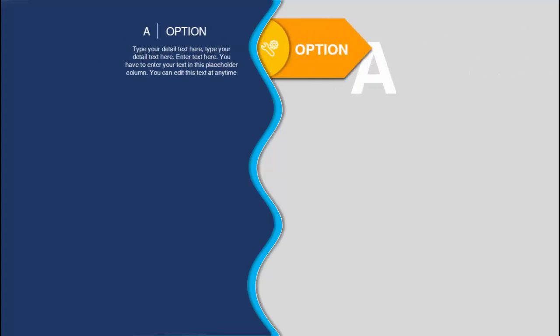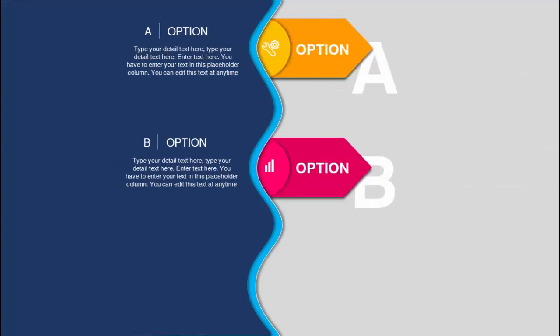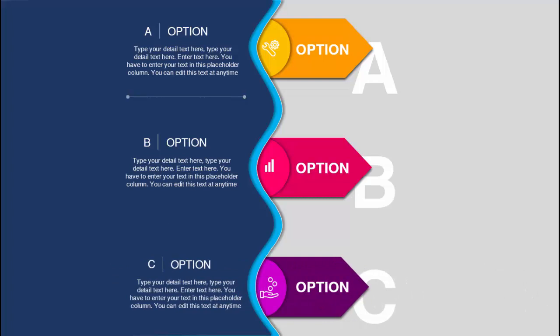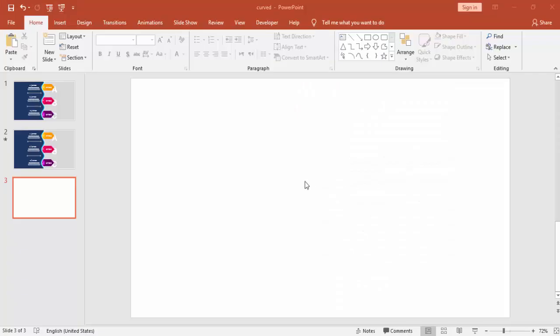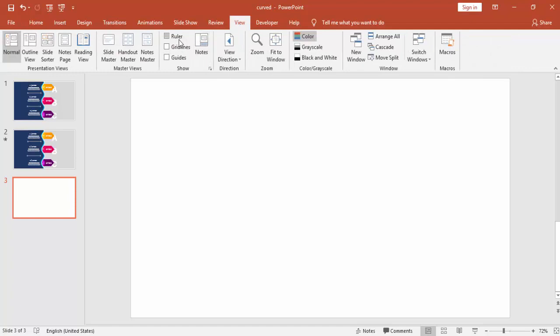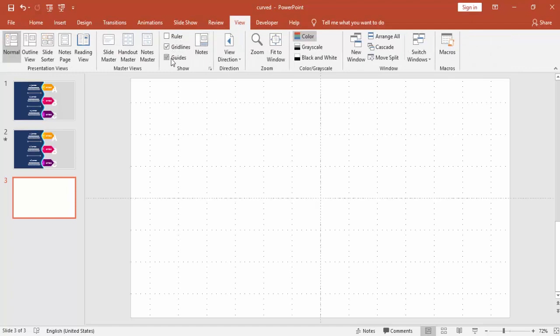Hello and welcome to my YouTube channel PowerPoint University. In this tutorial I'm going to show you how to create this animated slide in PowerPoint. Let's start — add a new slide, go to the View tab, enable grid lines and guides.